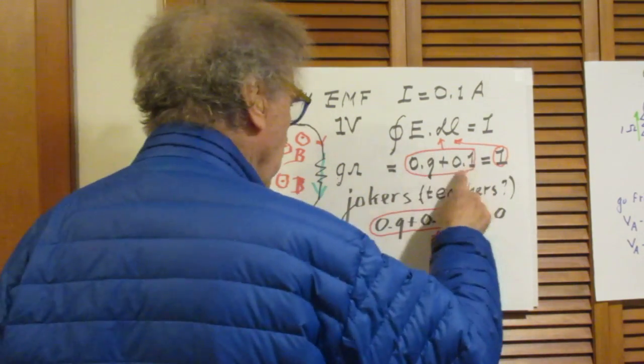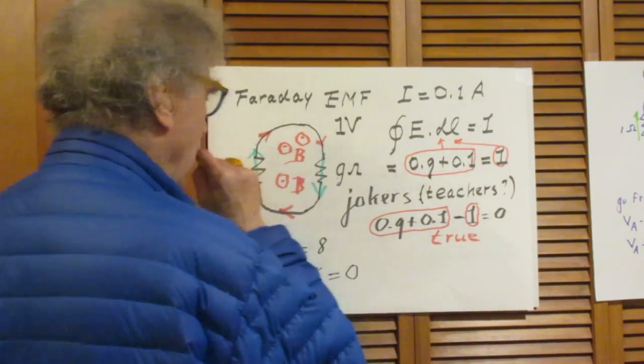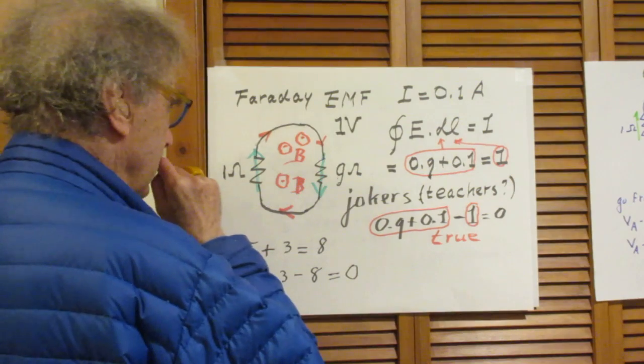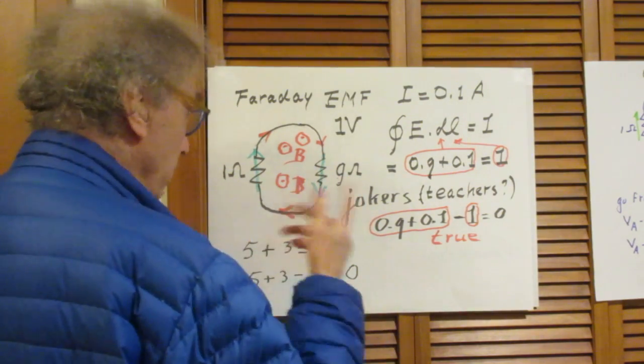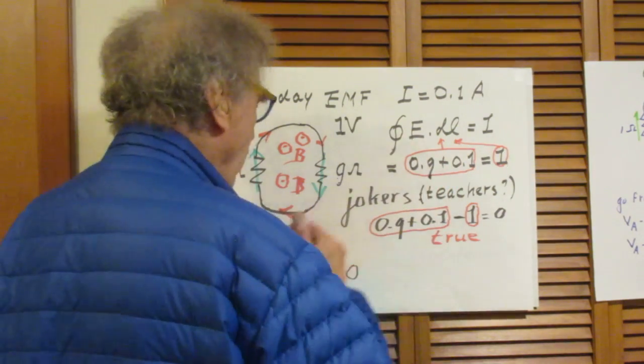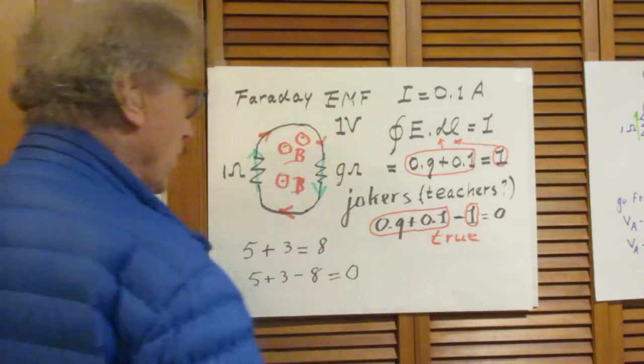And so the closed loop integral of this is exactly as specified by Faraday. And this resistor takes 0.9 volts and this resistor takes 0.1 volts. So this is 1. No one will argue with that.